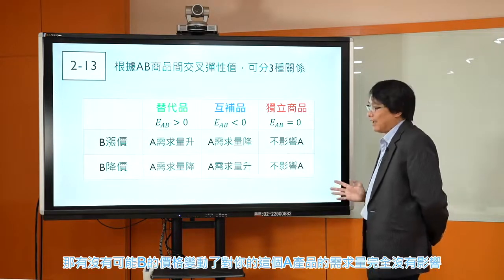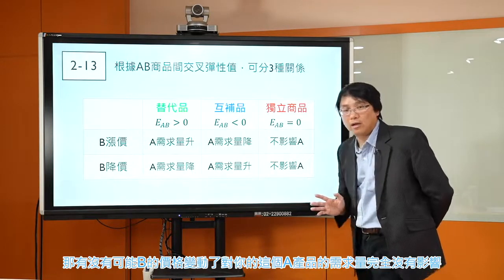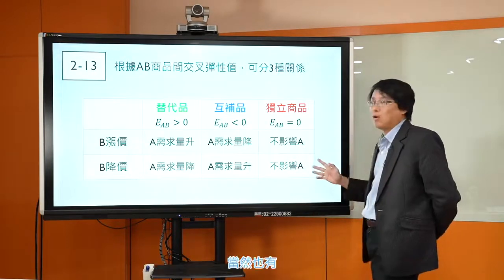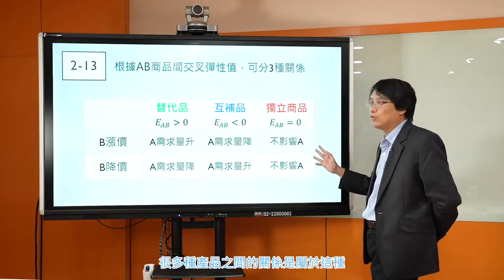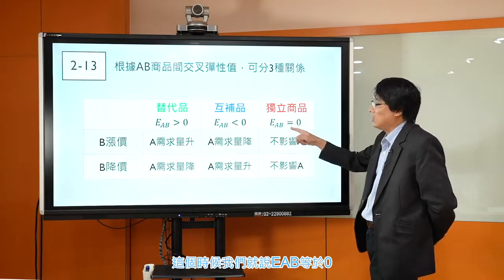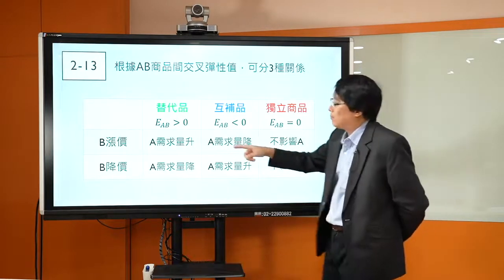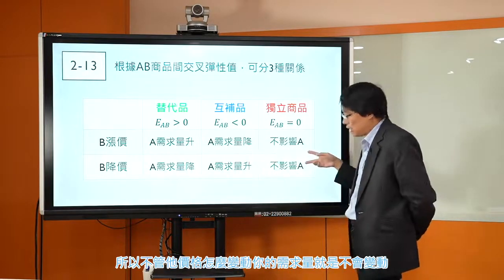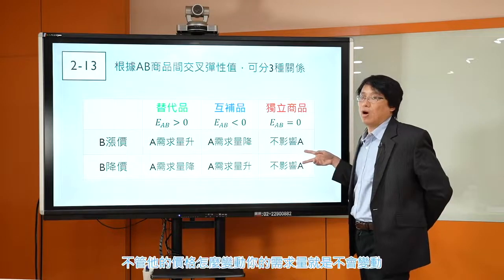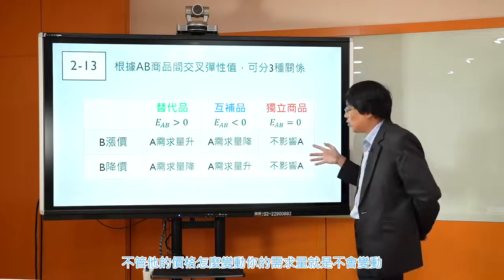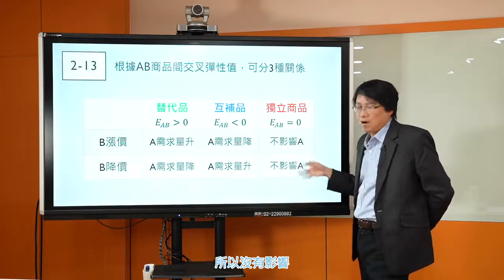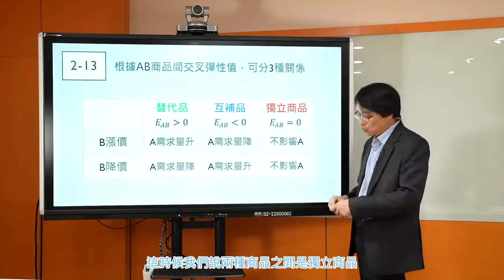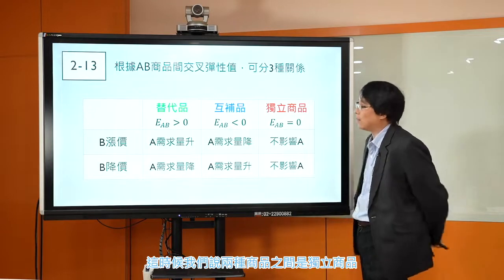那有没有可能B的价格变动了，对你的A产品的需求量完全没有影响？当然也有很多种产品之间的关系是属于这一种。这个时候我们就说EAB等于零。B涨价降价对A来说完全不会影响，不管他价格怎么变动，你的需求量就是不会变动。所以EAB等于零，这时候我们说这两种商品之间是独立商品。